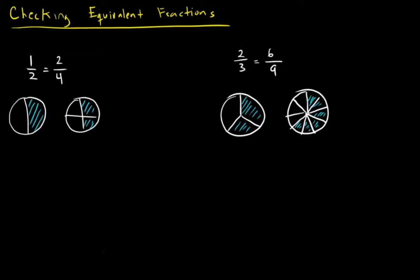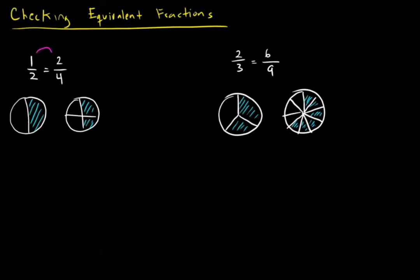Another thing that we saw is that we can see if the numerator and denominator were multiplied or divided by the same number. Here, you can see that 2 times 1 will give us 2, and 2 times 2 will give us 4. So that's how I know they're equivalent, because they share the same scale factor. You can also go backwards using division. We see that 2 divided by 2 will give us 1, and 4 divided by 2 will give us 2.